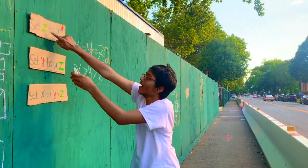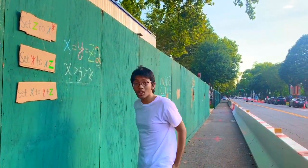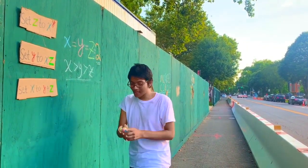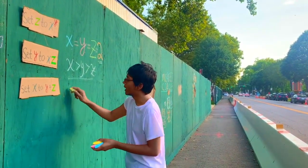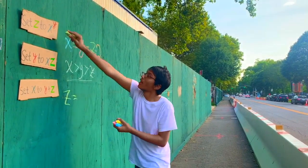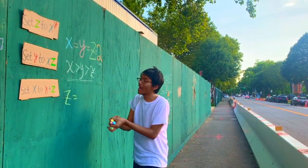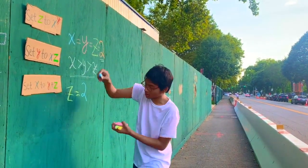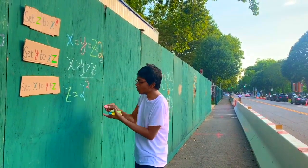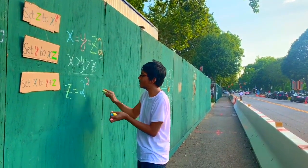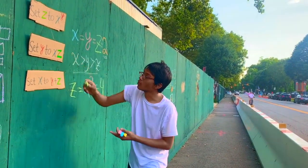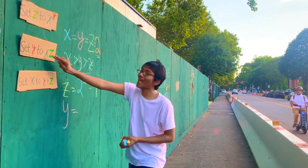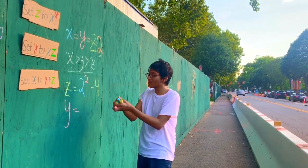Let me color code all of this for your convenience. We have z equals x to the y. Now what is x? x is 2, and we know y is also 2. And so z ends up being 4.